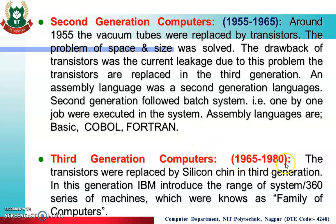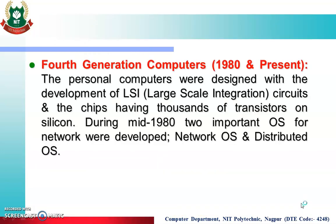The third generation of computers spans from 1965 to 1980, where transistors were replaced by silicon chips. IBM introduced the System/360 series of machines, which were known as a family of computers. The fourth generation spans from 1980 to the present. Personal computers were designed with the development of LSI (Large Scale Integration) circuits, with chips having thousands of transistors on silicon. During the mid-1980s, important operating systems for networks were developed — network operating systems and distributed operating systems. In the first two generations, there was no operating system, but from the third generation onward, operating systems began to develop.